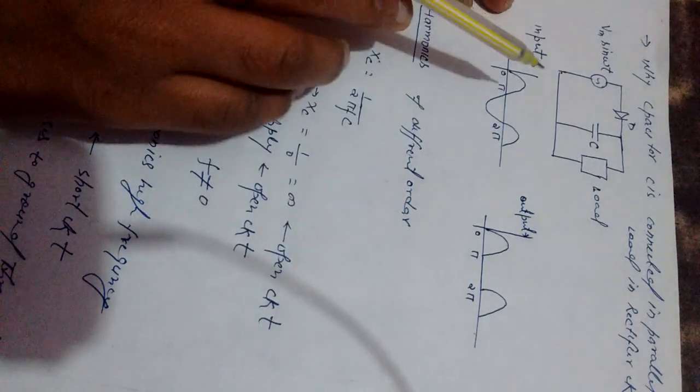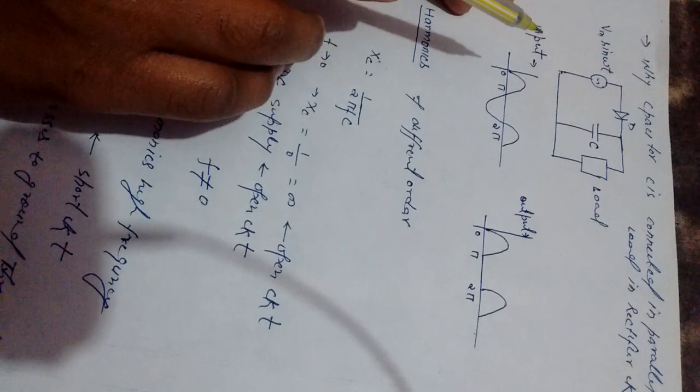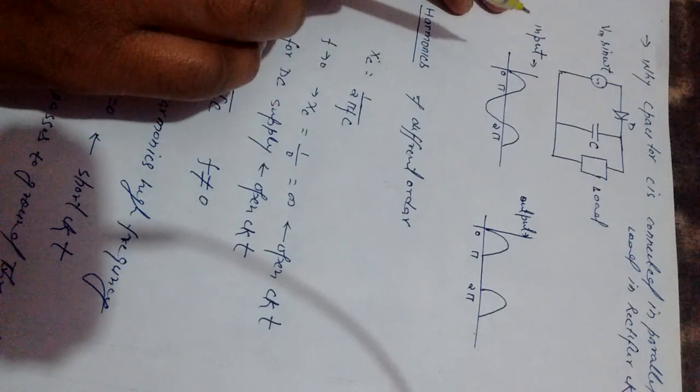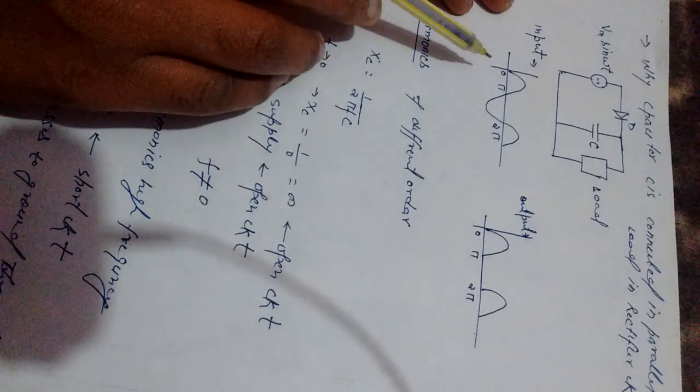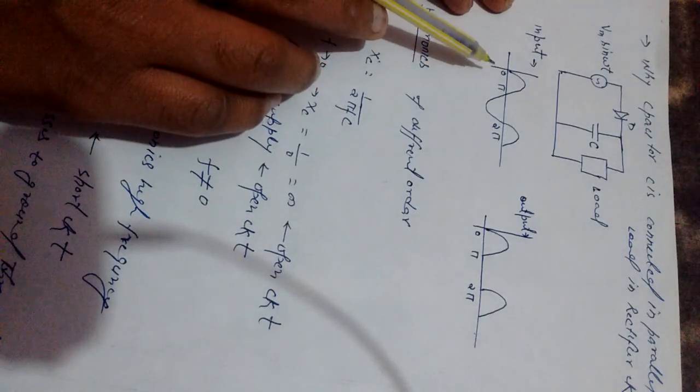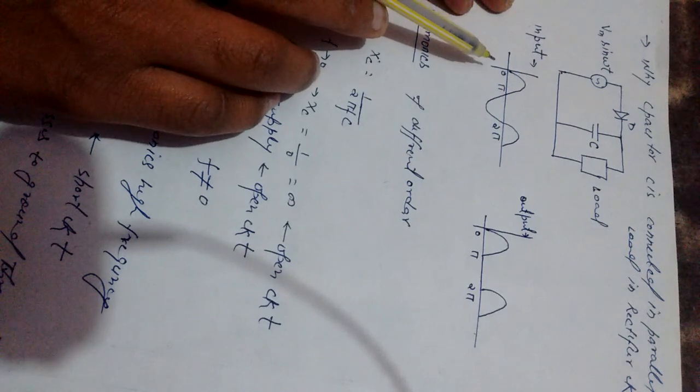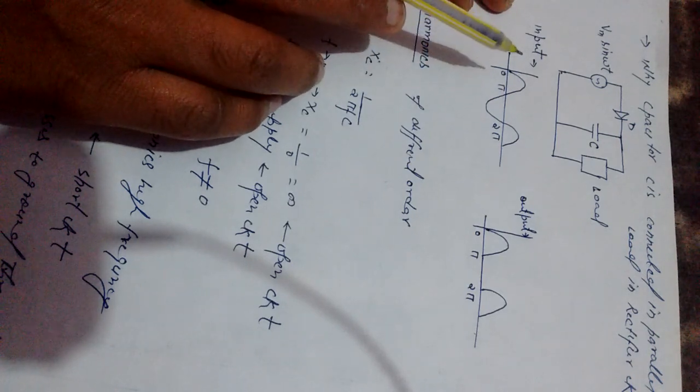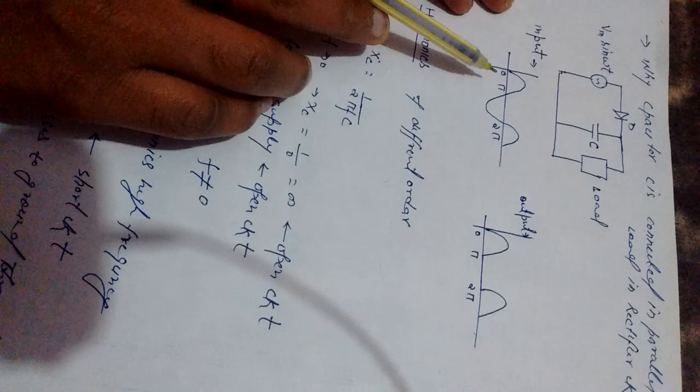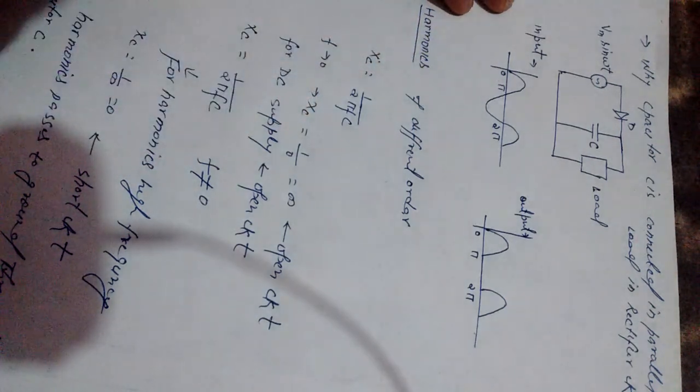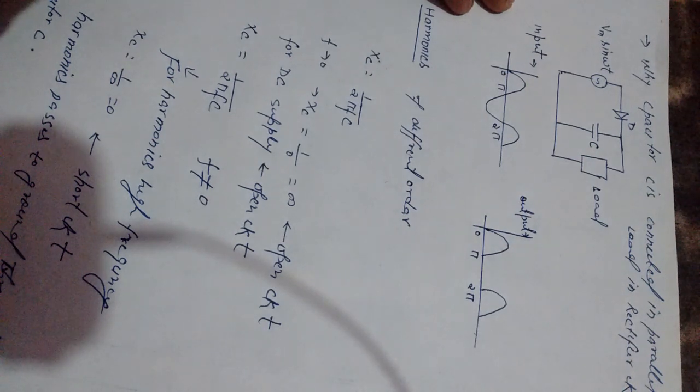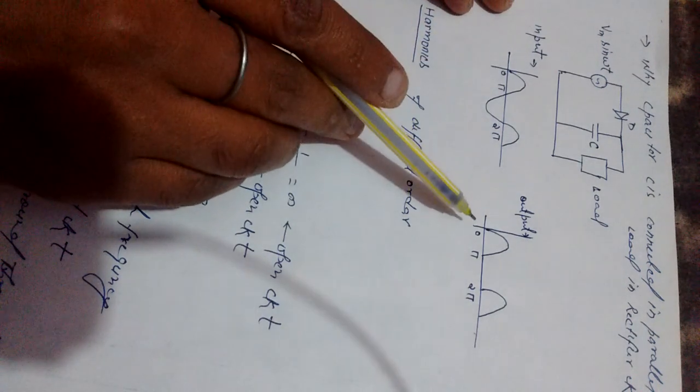As you know, the diode only works in the positive half cycle of the AC supply from 0 to π. When the signal is positive, then the diode will be in forward bias, and from π to 2π the diode will be in reverse bias. In forward bias the diode will conduct, and in reverse bias the diode will not conduct.